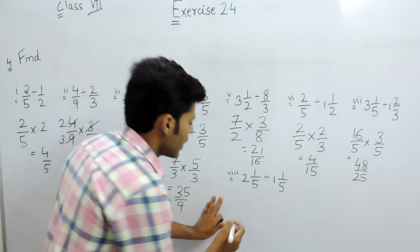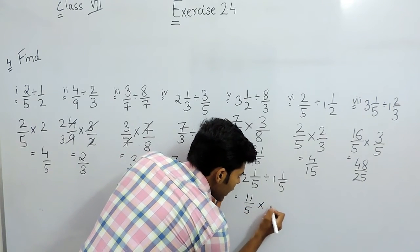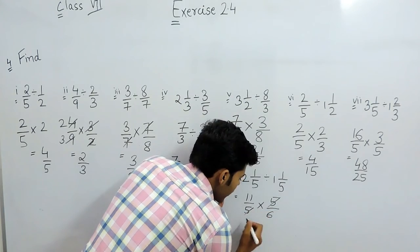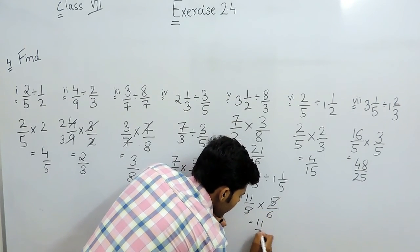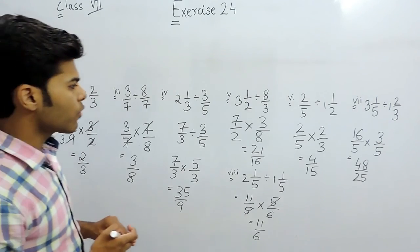Now, in the last part it will be 11 by 5 multiplied with 5 by 6 and 5 and 5 will be cancelled out and it will be 11 by 6. This is how you can solve these type of questions.